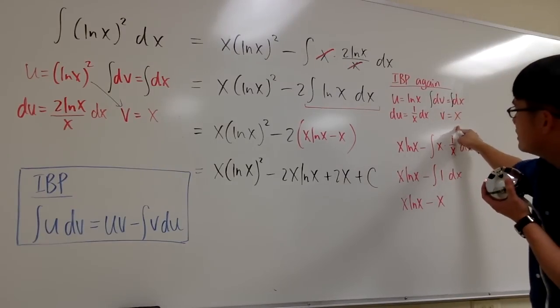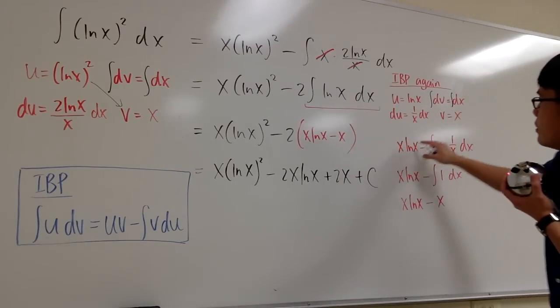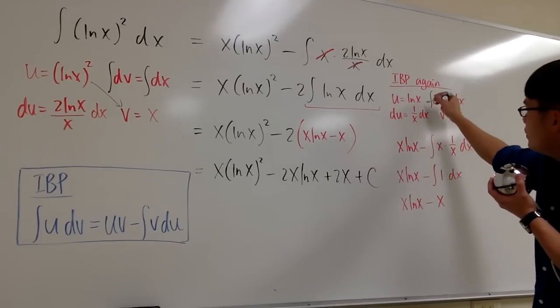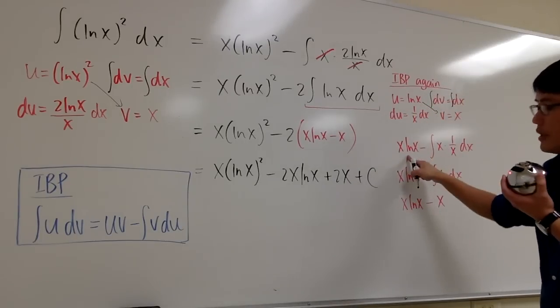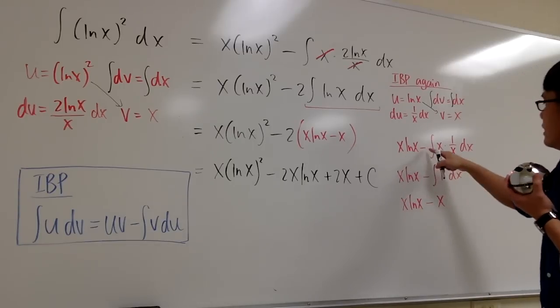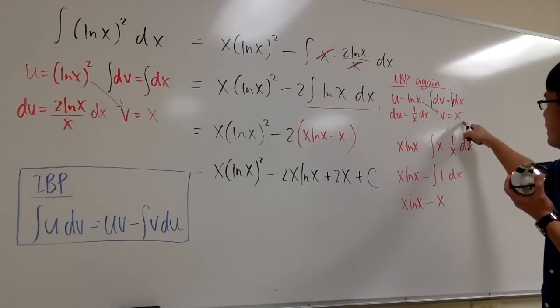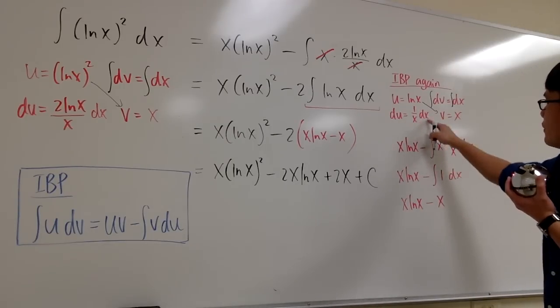And then what we'll do next is we'll focus on this integral. So this part right here is for that. Well, let's multiply u and v together. So I will have x times ln x. Right here, this is the uv. Subtract the integral of x times 1 over x dx.